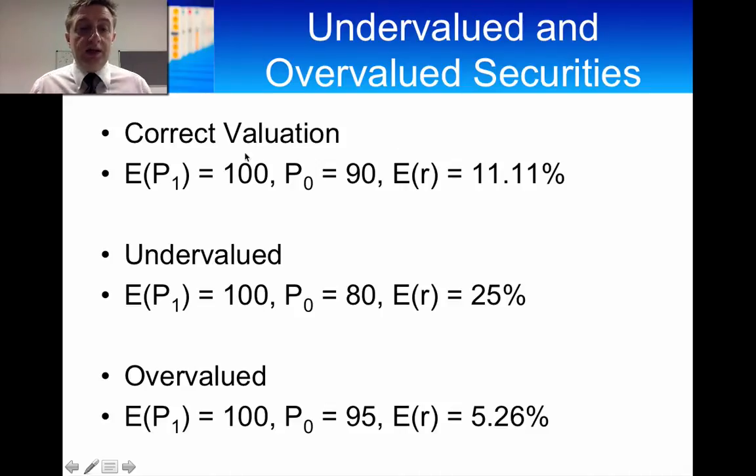So let's just assume that we've got a correct valuation here. You've got the expected price in one period from now is 100. You have the price today is 90. We'll assume that that's correctly valued. So the expected return on that asset then is 11%. Let's assume that it's undervalued then. So if it's undervalued, the price today is lower. It's 80.